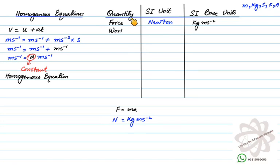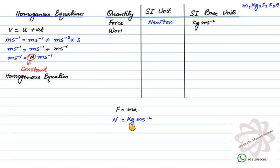In the first column I have written force, and its SI unit is Newton. To find the SI base unit of Newton, use the equation F = ma. Mass has SI unit kg, and acceleration has SI unit ms⁻². So kg ms⁻² is the SI base unit of force.